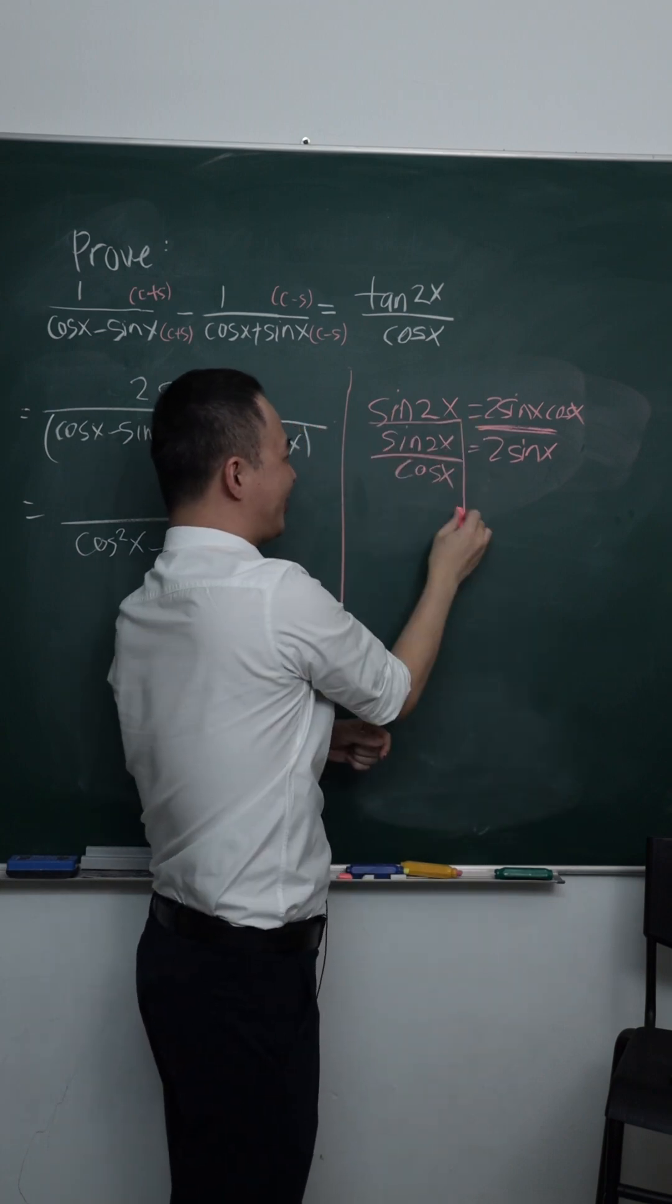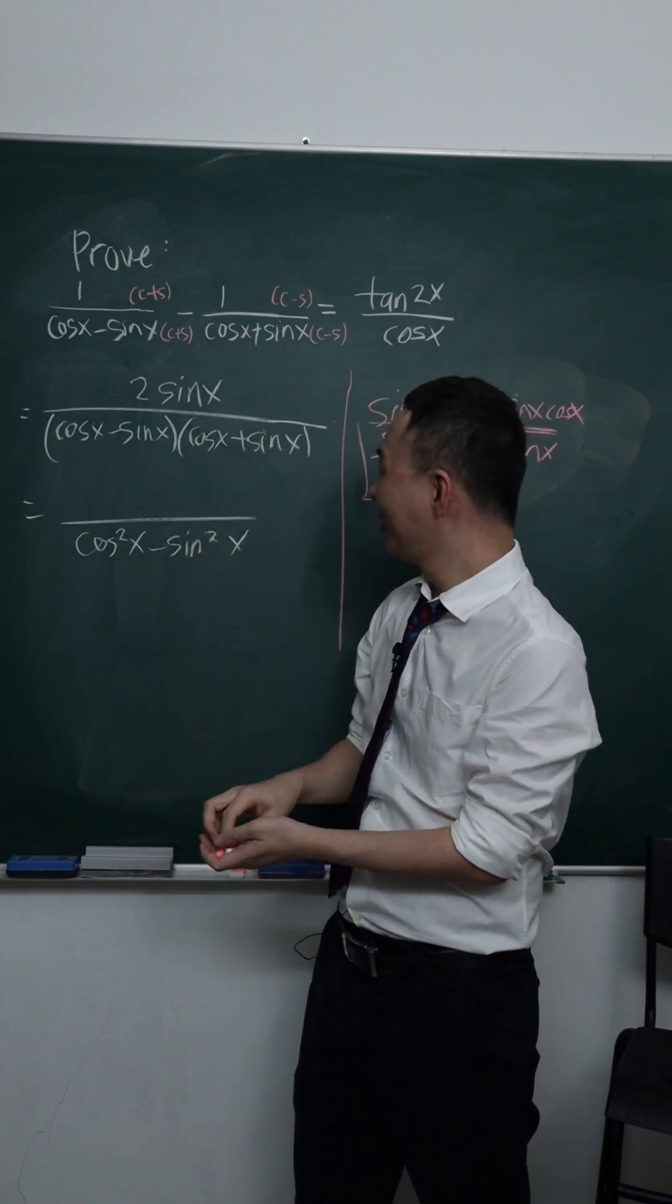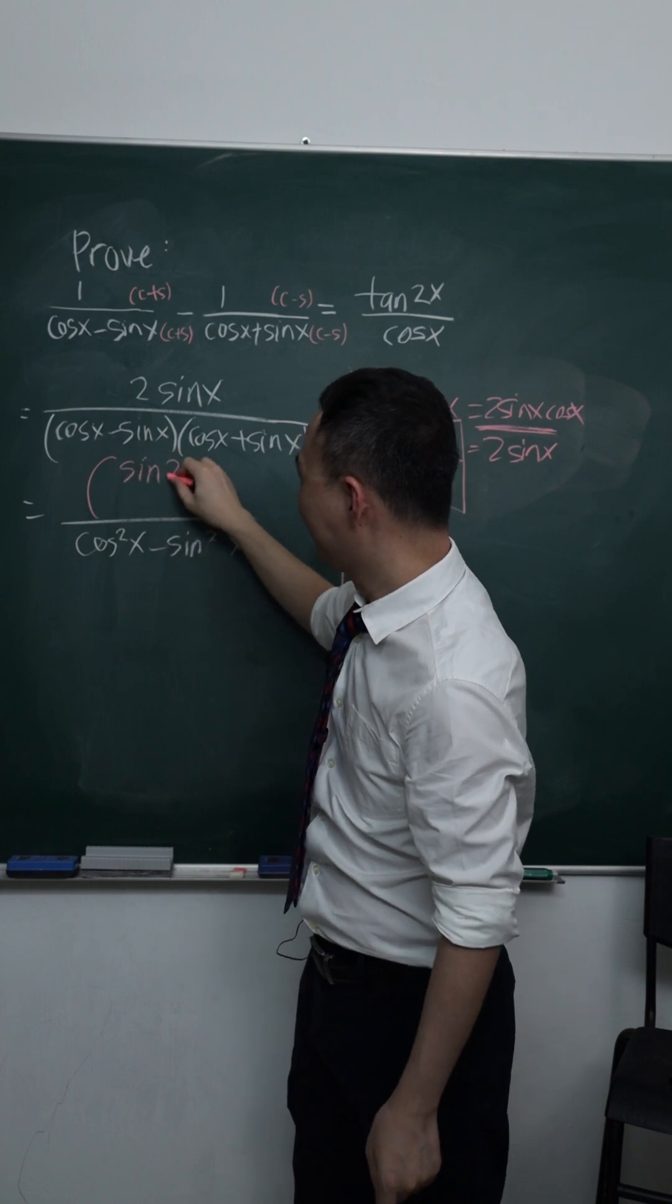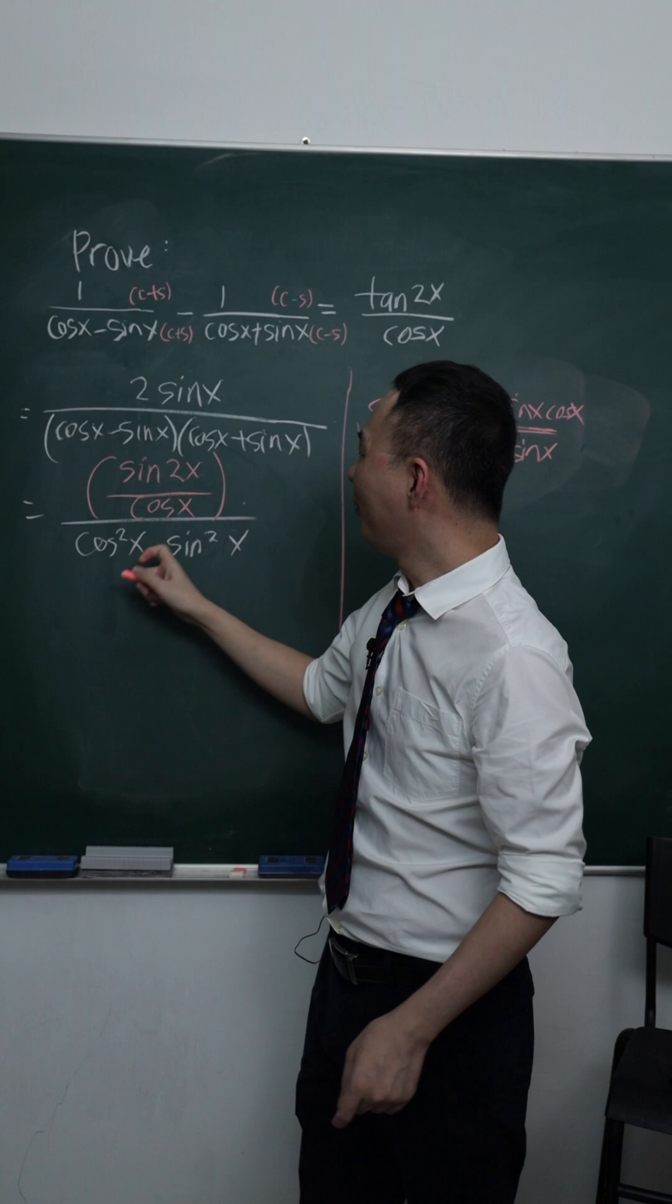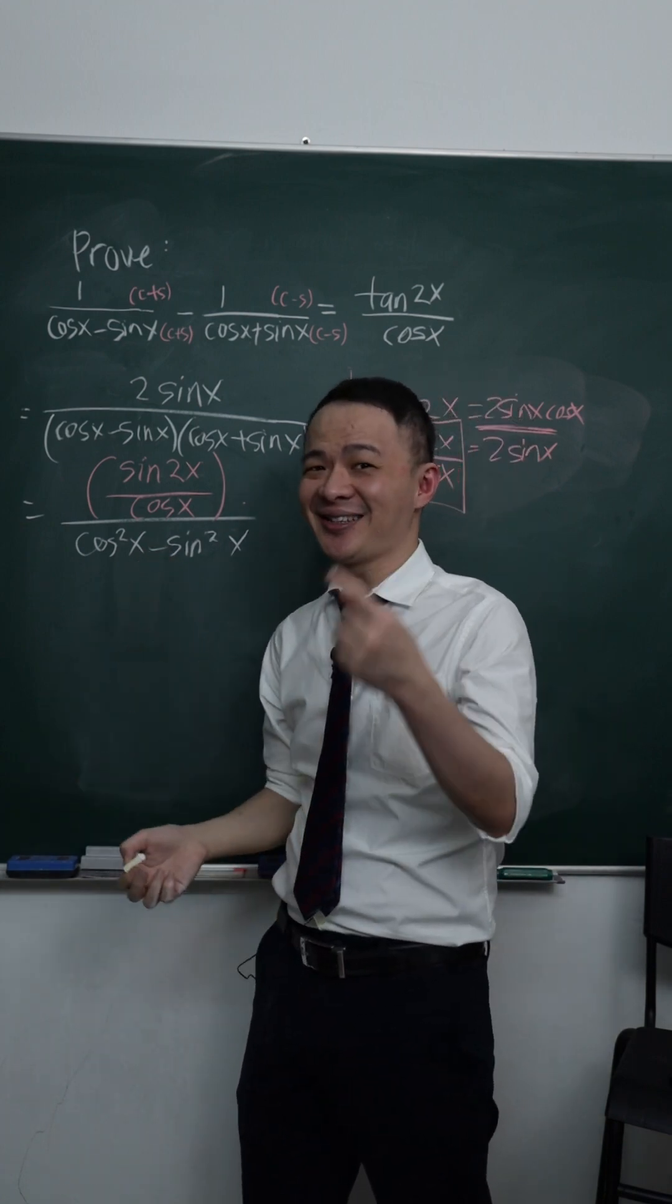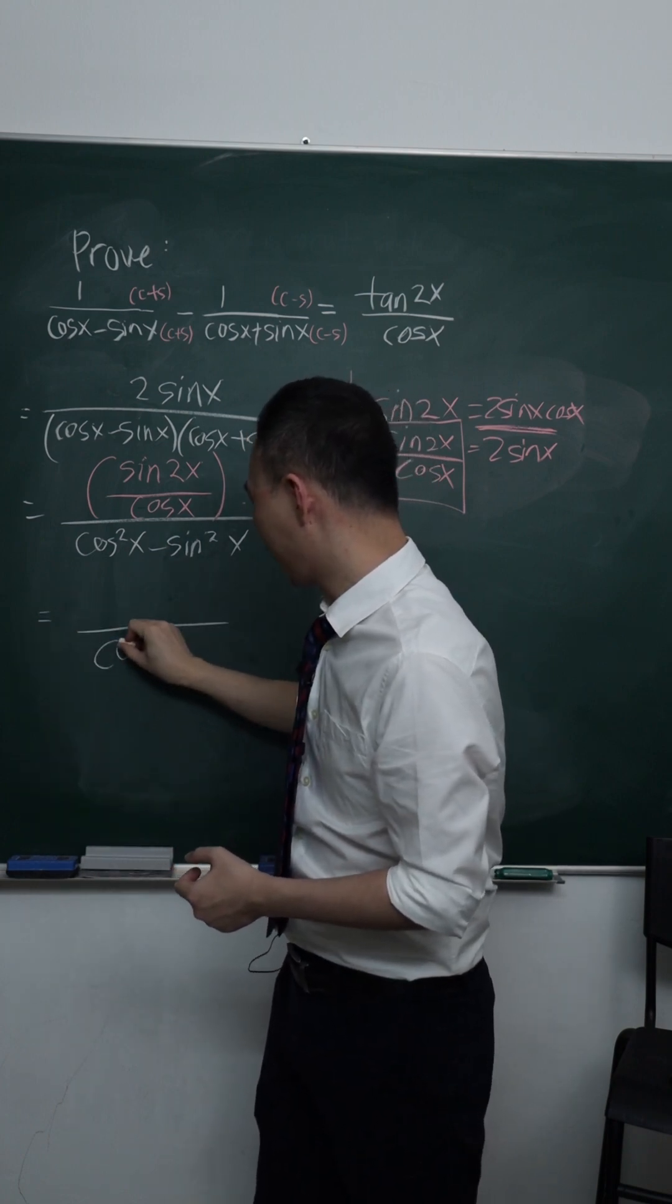So I can substitute this one into my equation, because right now I know what is my two sin x, which is sine two x divided by cos x. How about my denominator? My denominator cos squared minus sine squared x sounds familiar to you. It's a double angle for cos, isn't it? So this one will be cos two x.